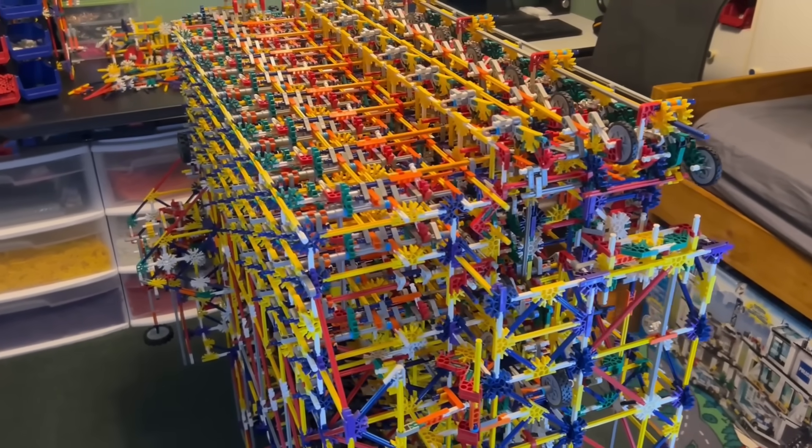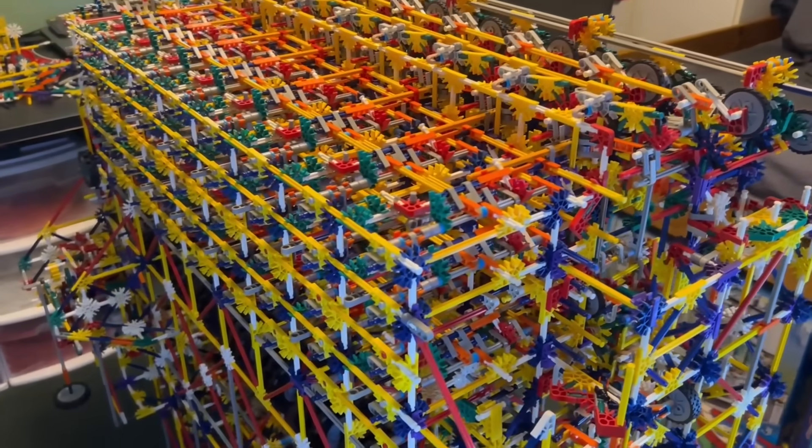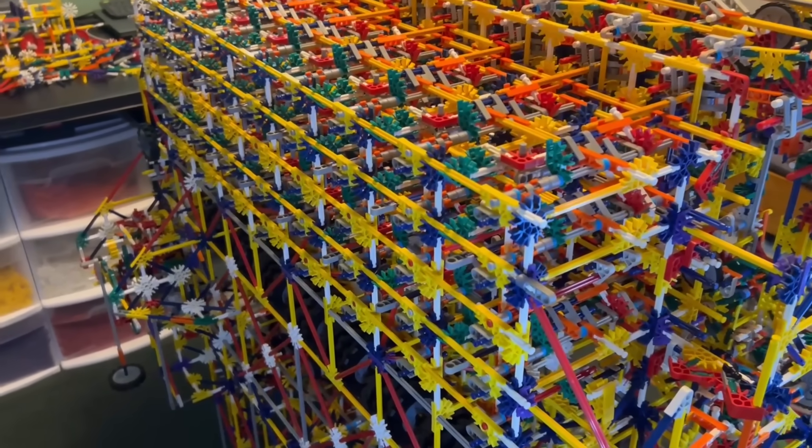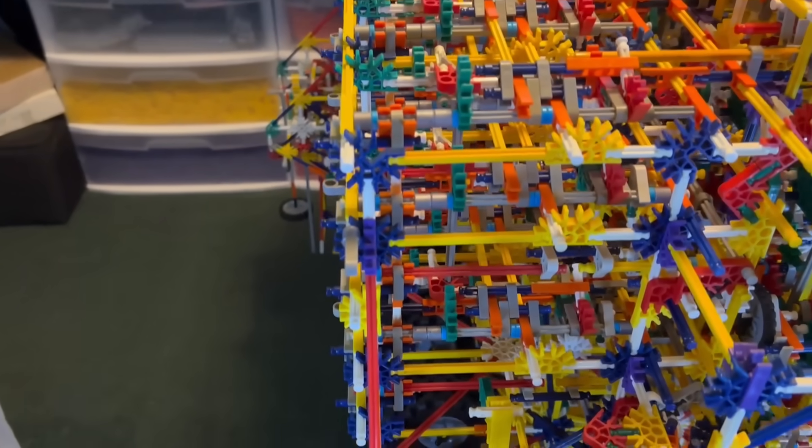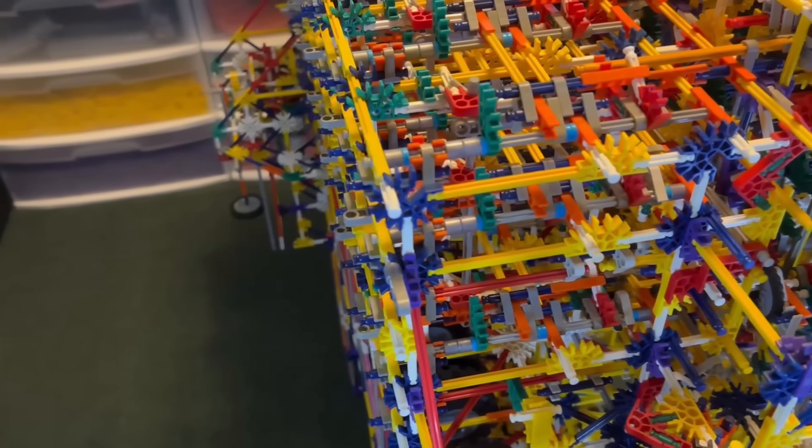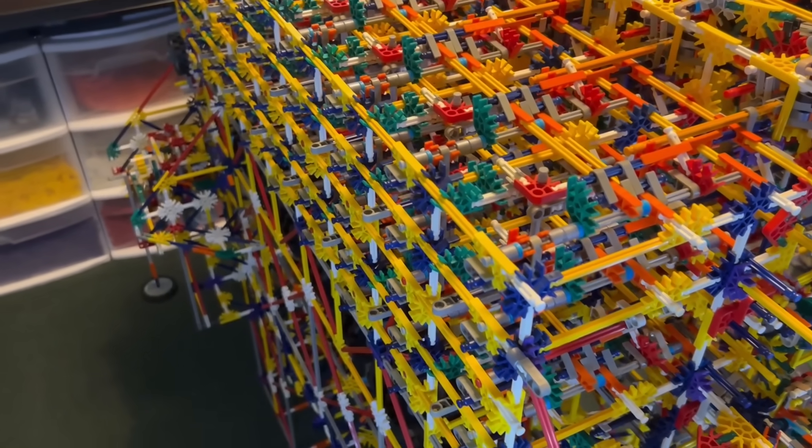Since the ALU operates on two numbers, we need to store those before anything is done and that is done in these two registers back here. It's probably a little bit difficult to tell exactly how they're stored. I'm going to cover the registers in a later episode when I talk about data transfer because I don't have that part finished yet.